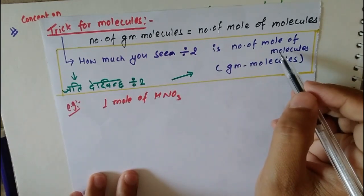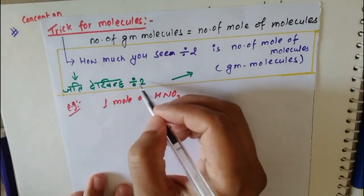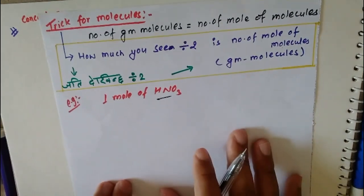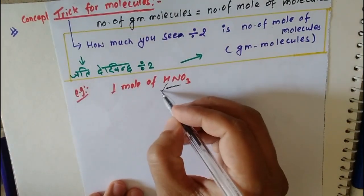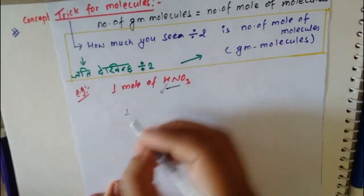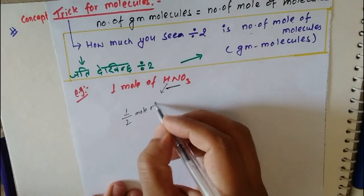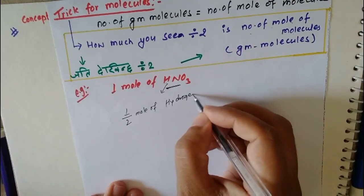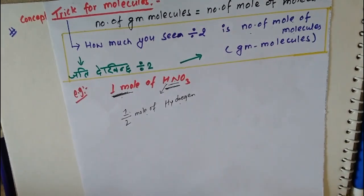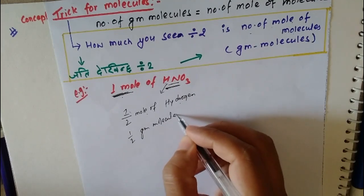For gram molecules, how much you see divided by 2 is the number of moles of molecules, or gram molecules. For example, in HNO3, how many gram molecules of hydrogen? How much you see? 1. Divided by 2 is the number of moles of molecules — so 1 by 2 moles of hydrogen, or 1 by 2 gram molecules of hydrogen.